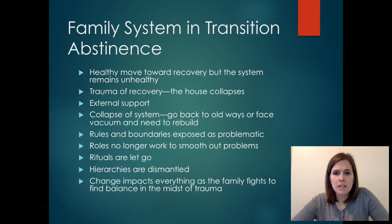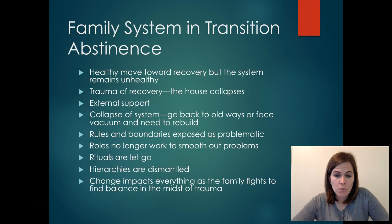As the family is transitioning to abstinence, they're making a healthy move toward recovery, but the system is still unhealthy. There's the trauma of recovery as everything's collapsing, and they're looking for external support. When the system collapses, it's going to be easy to go back to the old ways, or they have to face a vacuum and they have to rebuild. The rules and boundaries are going to be exposed as problematic. The roles are no longer going to be able to work to resolve the problems and keep the homeostasis that was maintaining the addiction.